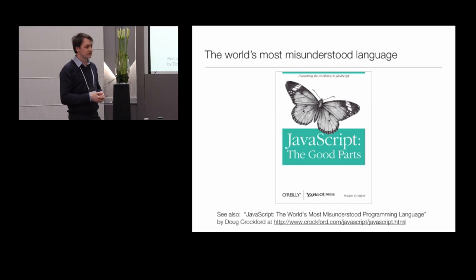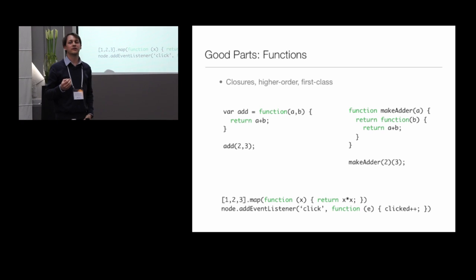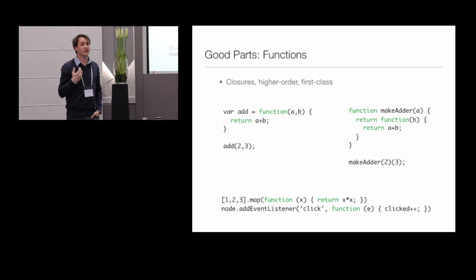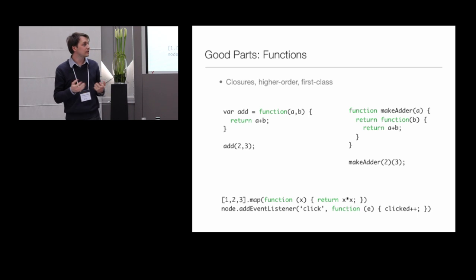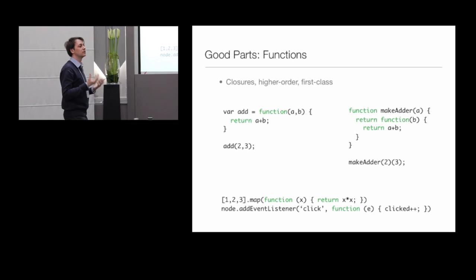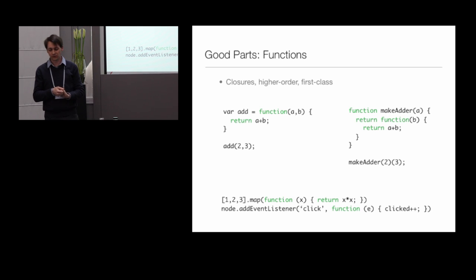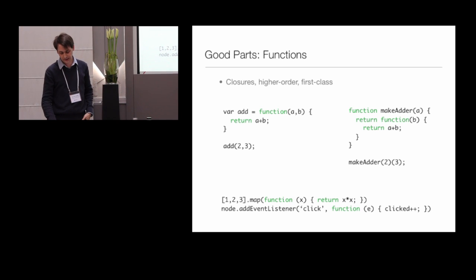One of the most excellent parts Crockford calls out is that JavaScript has extremely good support for functions. It's been discovered that you can do pretty good functional programming in JavaScript. Functions are first-class values — you can assign them to variables, create functions that return functions, and have higher-order functions. These patterns are used quite a lot: on arrays we have higher-order functions like map. And if you've done web programming, it's very event-driven, so you end up registering callbacks all the time. Functions are really the power tool that works in most cases.